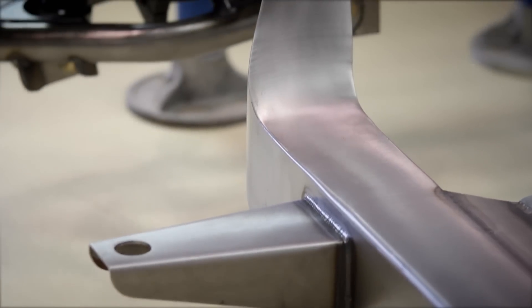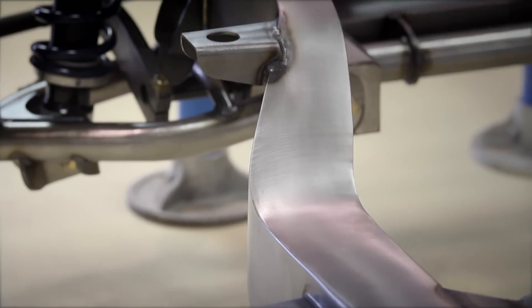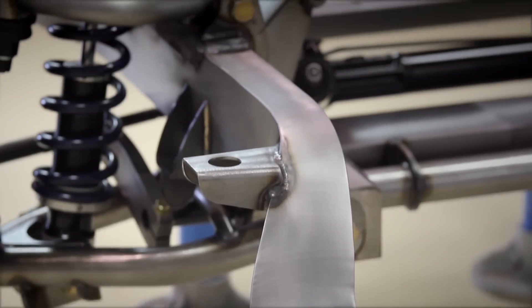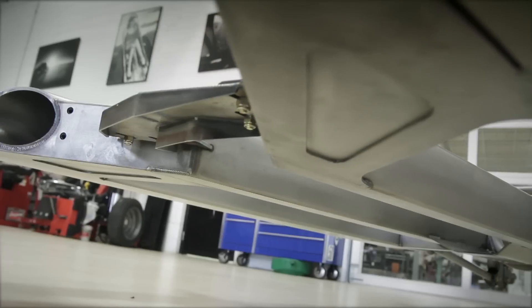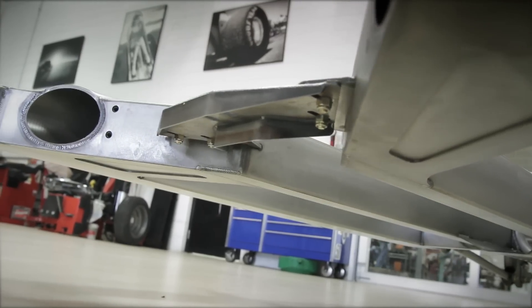The ride height for the Tri-5 chassis is available in two configurations. Our lowered stance, which will put your rocker panels roughly at six inches off the ground depending on your wheel and tire size.